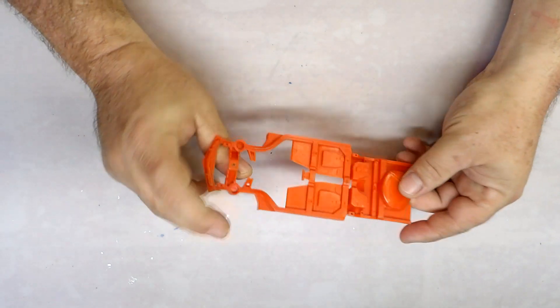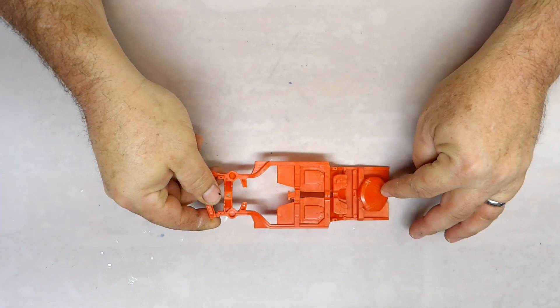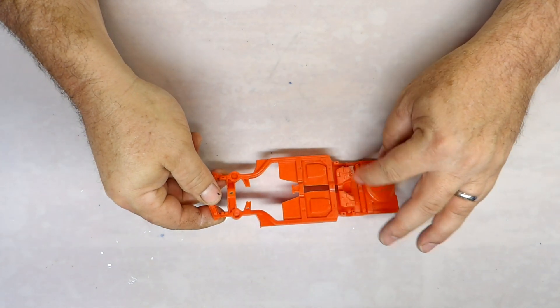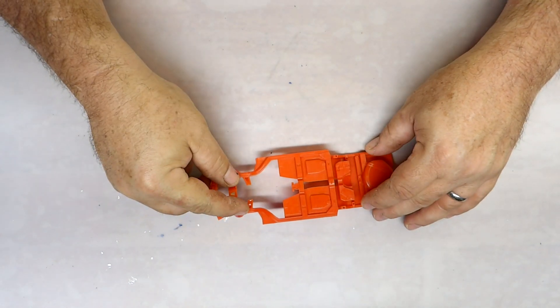Here's the frame, got the gas tank or the spare tire here molded in. Here's where your rear suspension goes, front suspension.